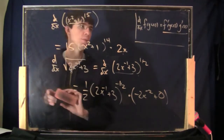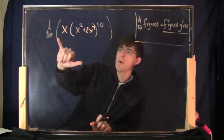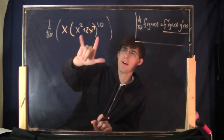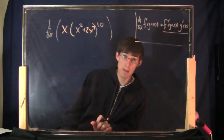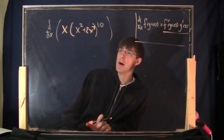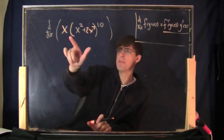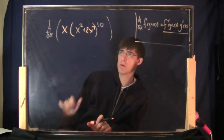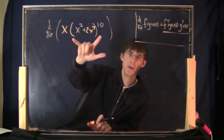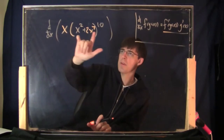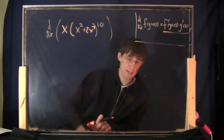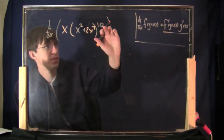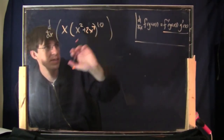Let's try one more. We've got the derivative of x times x squared plus 2x to the 7th, that whole thing to the 10th. How do you do this? This much of it looks similar to the ones we've been doing using the chain rule. But what about the fact that this is multiplied by x?